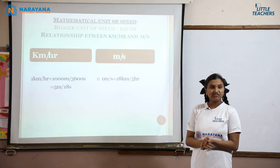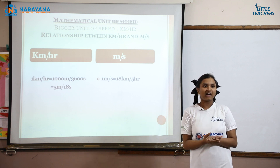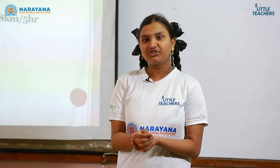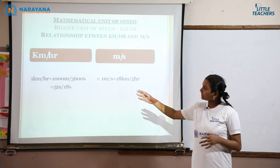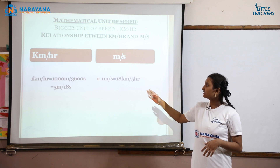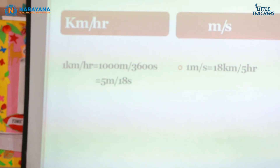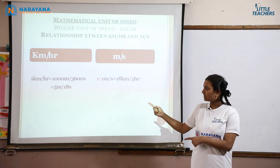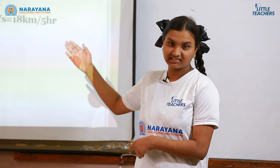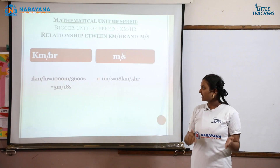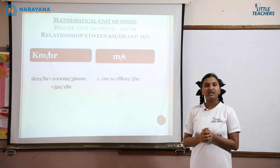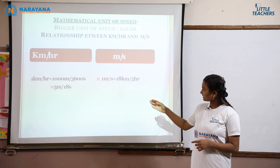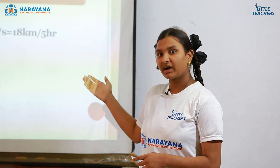The biggest unit to measure speed is kilometer per hour, used in our daily life. The relationship between meter per second and kilometer per hour is: 1 kilometer per hour equals 1000 by 3600 seconds, which simplifies to 5/18 meter per second, because 1 kilometer equals 1000 meters and 1 hour equals 3600 seconds. And 1 meter per second equals 18/5 kilometer per hour.